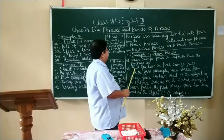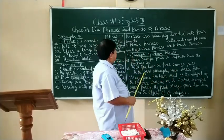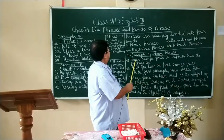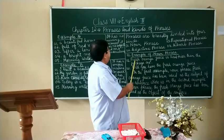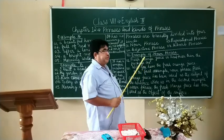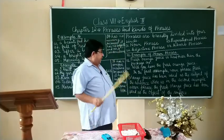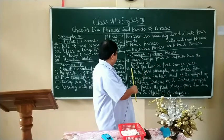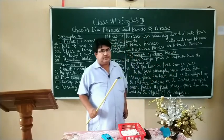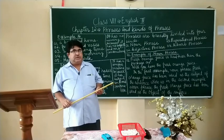Now you see Example 2: Will you have some orange juice? In the first example, the noun phrase fresh orange juice has been used as the subject of the sentence, whereas in Example 2, the phrase orange juice, which is a noun phrase, has been used as the object of the sentence.